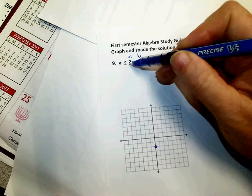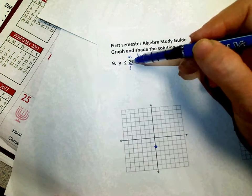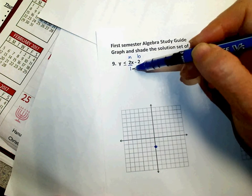My slope, if it's not a fraction, go ahead and put the understood 1 under there so that you know that it goes up 2 and over 1.